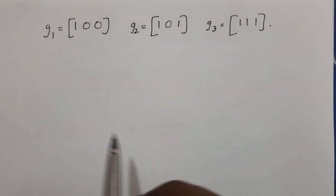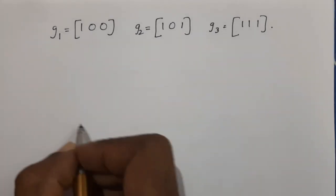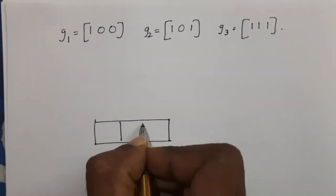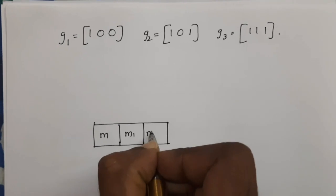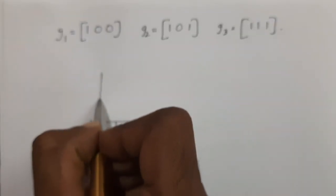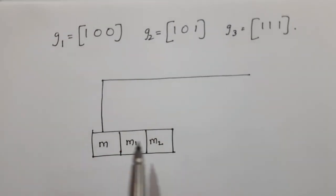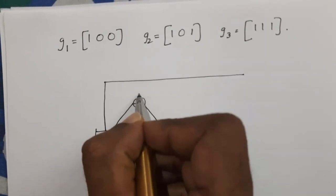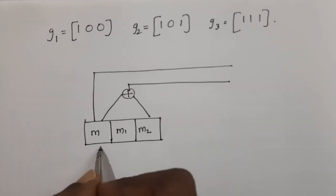First, we will draw the convolutional encoder for this particular generating sequence. The input stage has memory elements M1 and M2. The first generator sequence is 1, 0, 0; the second sequence is 1, 0, 1; and the third sequence is 1, 1, 1.